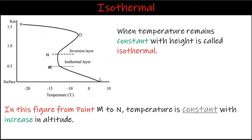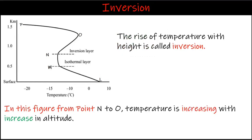If the temperature remains constant with height, it is called isothermal. In this figure, from point M to N, temperature is constant with increase in altitude, thus this is the isothermal region. The rise of temperature with height is called inversion.